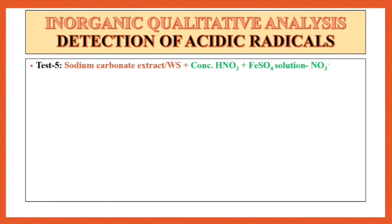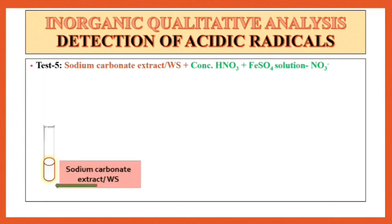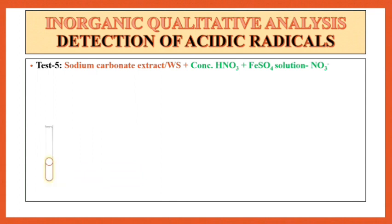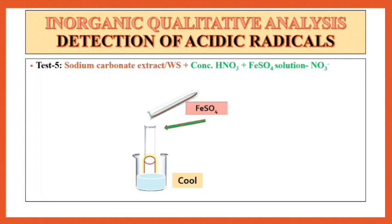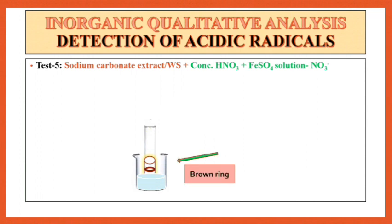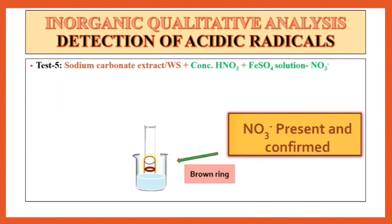Test number 5 is for the detection of NO3⁻. For that, take sodium carbonate extract or water solution. To this solution, add concentrated H2SO4 drop wise and shake this solution well. After the addition, place this test tube in a water-containing beaker for cooling. Then add freshly prepared FeSO4 solution drop wise from the side of the test tube. A brown ring will develop at the junction of these two solutions. So NO3⁻ is present and confirmed.